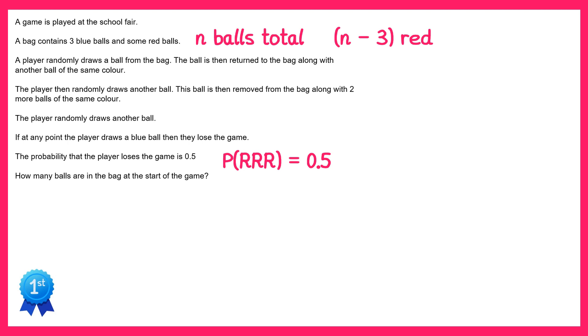So on the first pick there are n balls in total and n minus three of them are red, so the probability of picking a red will be n minus three over n.